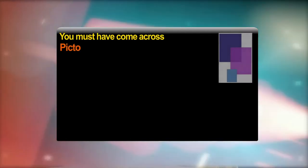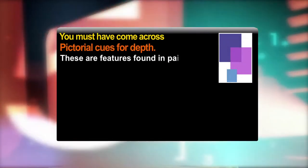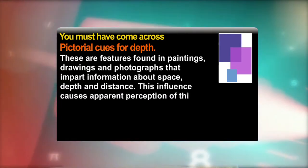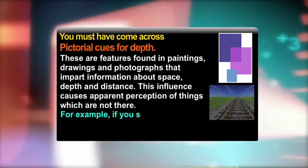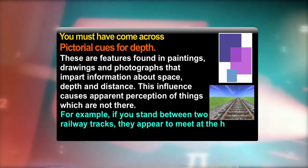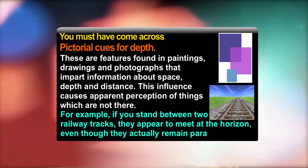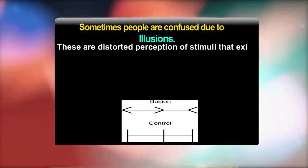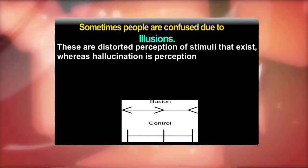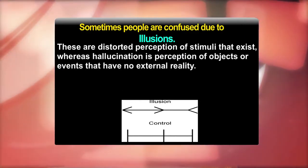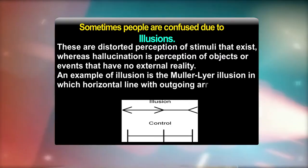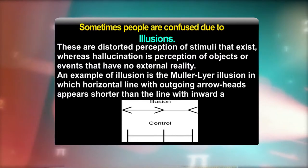Pictorial cues for depth are features found in paintings, drawings, and photographs that impart information about space, depth, and distance. For example, if you stand between two railway tracks, they appear to meet at the horizon even though they actually remain parallel. Sometimes people are confused by illusions, which are distorted perceptions of stimuli that exist, whereas hallucination is perception of objects or events that have no external reality. An example of illusion is the Muller-Lyer illusion, in which a horizontal line with outgoing arrowheads appears shorter than a line with inward arrows.